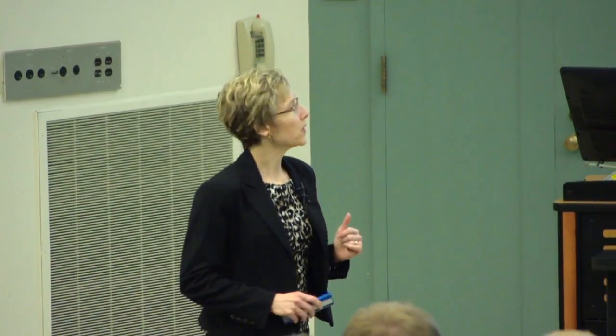There's another difference between electron current and conventional current, and that's in the units. Electron current is in terms of electrons per second — just how many electrons per second are passing by this point.